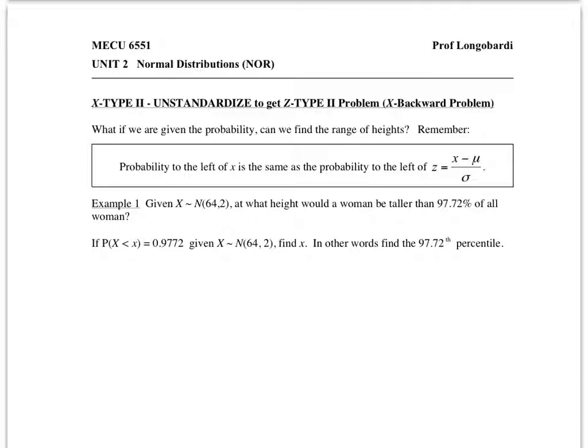That's an X Type 2 problem. Given the probability, find the variable value. You should remember seeing something like this but with Z's in it. But now we're writing X's in it because we're referring to a particular normal distribution. So this is about women with heights that are normally distributed with a mean of 64 and a standard deviation of 2. We want to find the height that a woman would be if she was taller than 97.72% of all women.